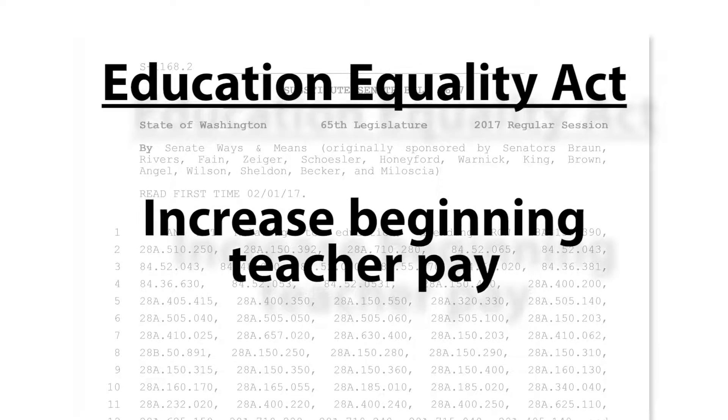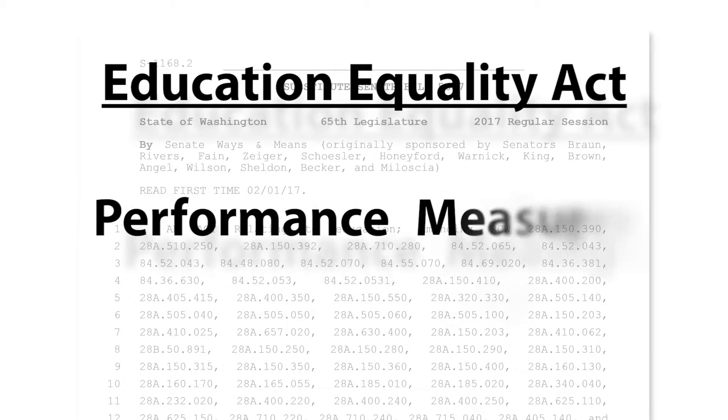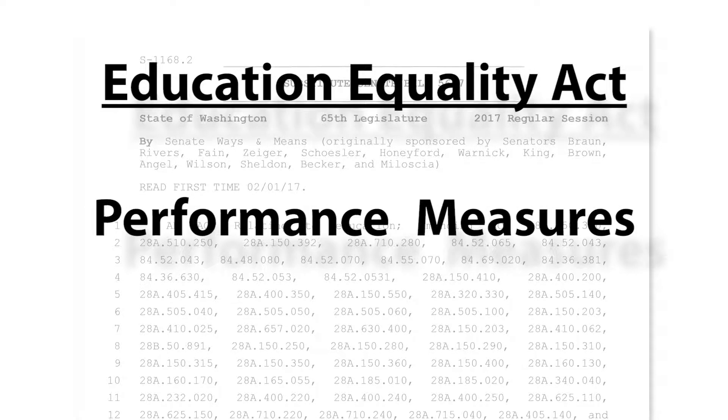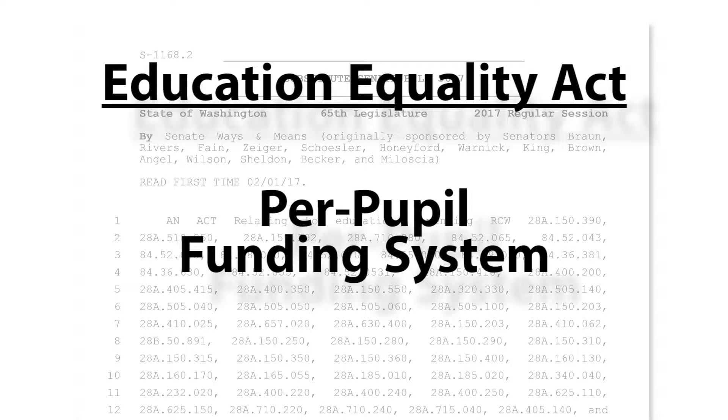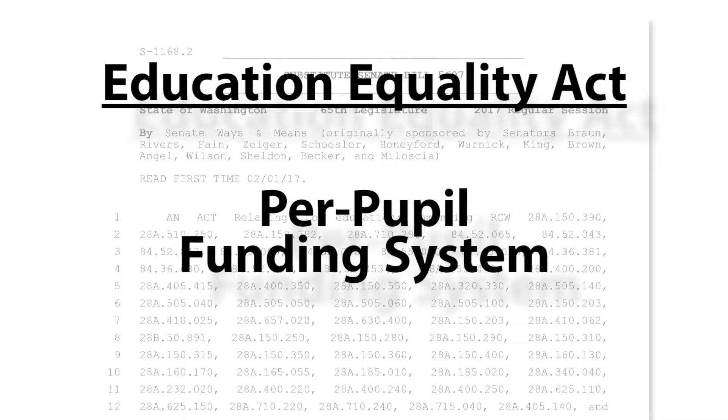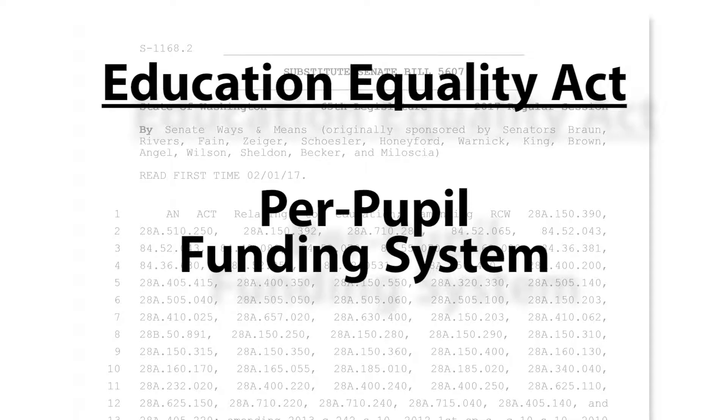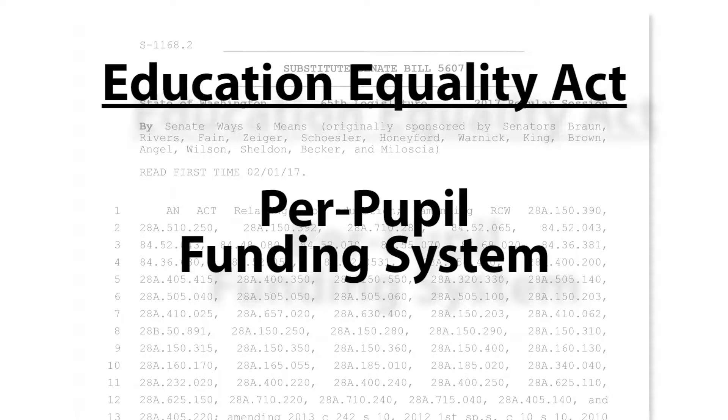The proposal would increase beginning teacher pay and would provide for performance measures to evaluate school districts' success. Also of note is the plan's adoption of a per-pupil funding system that would ensure every child receives an equitable education, which was at the heart of the McCleary ruling.